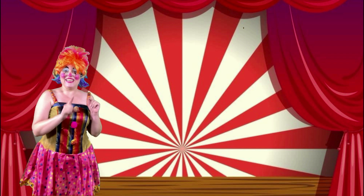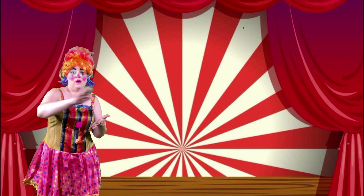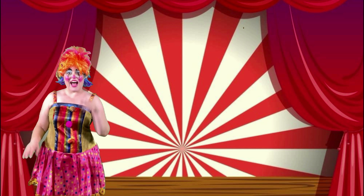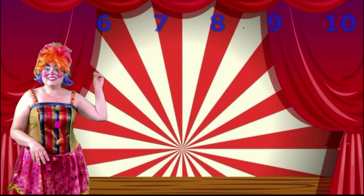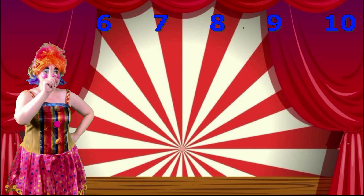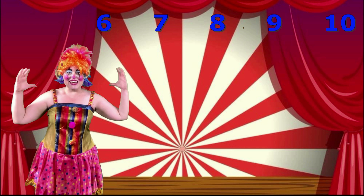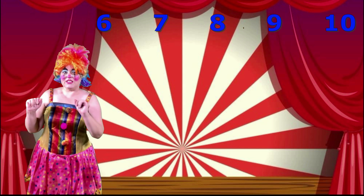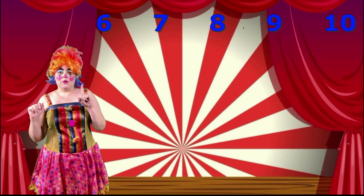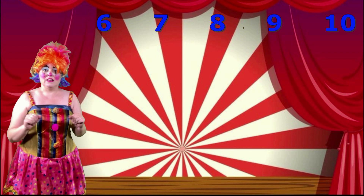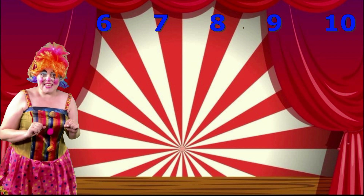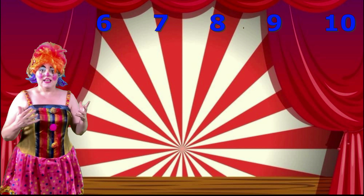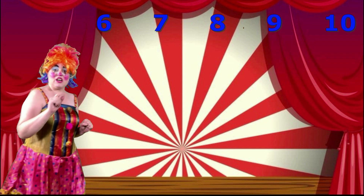We've worked out the numbers that are 10 times larger than 1, 2, 3, 4, and 5. Now, we're going to do the same for 6, 7, 8, 9, and 10. So, rub what you had on your whiteboard for 1, 2, 3, 4, and 5, and write the numbers 6, 7, 8, 9, and 10 at the top. We know that 10 times larger than 1 is 10; 2 is 20; 3 is 30; 4 is 40; 5 is 50. So, 10 times larger than 6 should be?